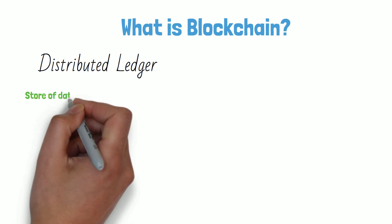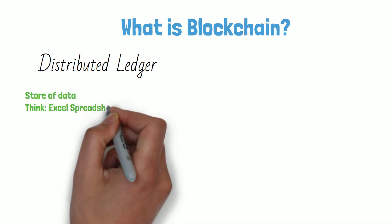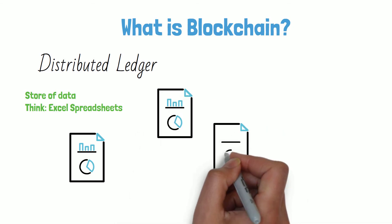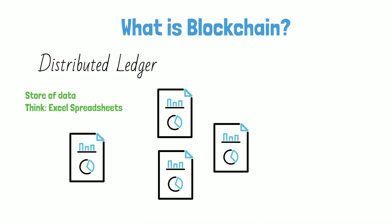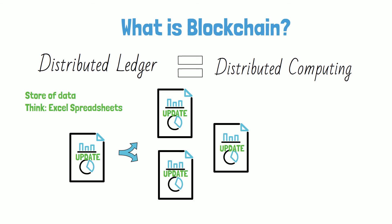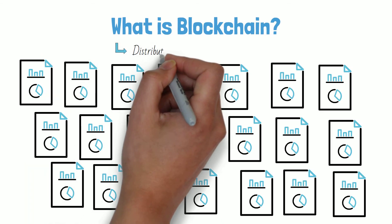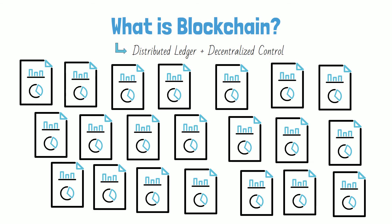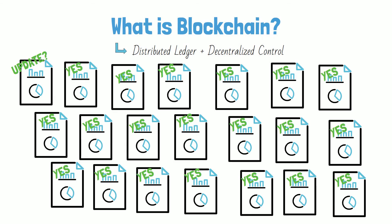Let's start with the idea of a distributed ledger — simply data spread across multiple locations. Think of this as Excel spreadsheets or a database, just a store of information, not in one place but with copies in a lot of different places. Every time my copy of the spreadsheet is updated, everyone else's copy is also updated — that's a distributed ledger. Now imagine this concept at scale: thousands of copies of the spreadsheet all over the world, combined with decentralized control, meaning you need others who own the copies to vote yes on the update.